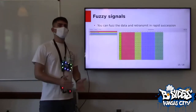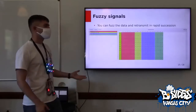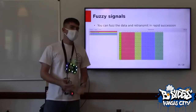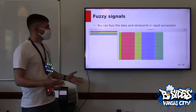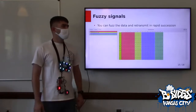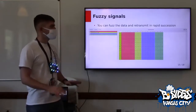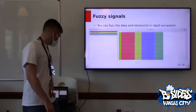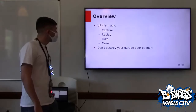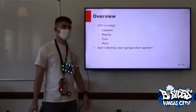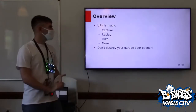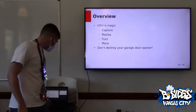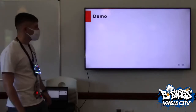Then you can fuzz data. Universal Radio Hacker allows you to quickly generate a fuzzing sequence to find out what you're looking at. For this demo I'm not going to go into that in depth, but essentially that's how you can try to find hidden commands — or, you know, break your neighbor's garage door opener. That's what URH is, and that's a little idea of what you can do with it. Now I'd like to give you an idea of what it does with a live demo.